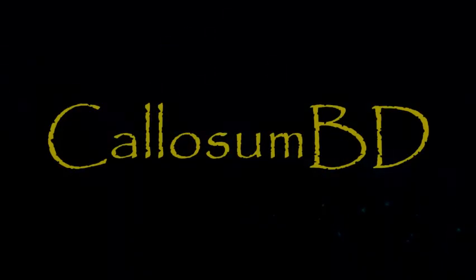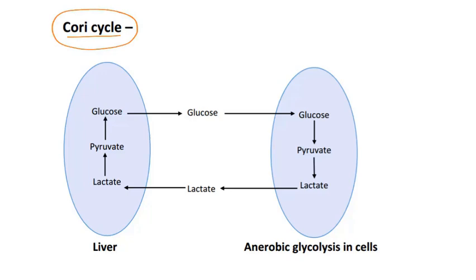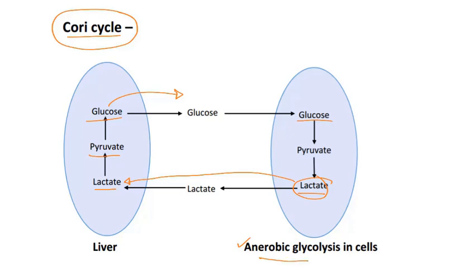The Cori cycle has a gluconeogenic process. In anaerobic glycolysis, glucose produces lactate. This lactate enters the liver through blood circulation, where it produces pyruvate, and through gluconeogenesis it produces glucose, which is then released back into blood circulation. So the Cori cycle is an integration of anaerobic glycolysis and gluconeogenesis.